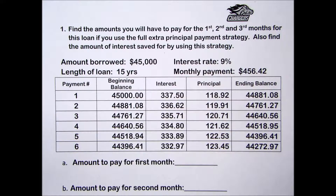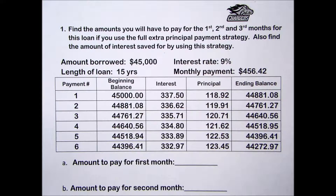Practice at 15, problem number one, page 52: find the amount you will have to pay for the first, second, and third months for this loan if you use the full extra principal payment strategy, and also find the amount of interest saved by using the strategy. This is part of an amortization schedule for $45,000 borrowed at 9% interest, a 15-year loan, and a monthly payment of $456.42.